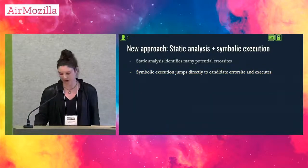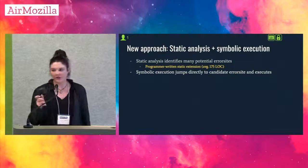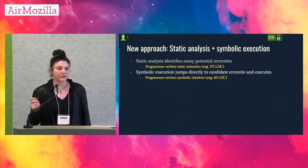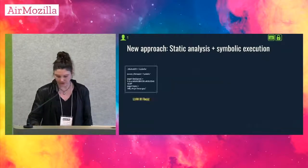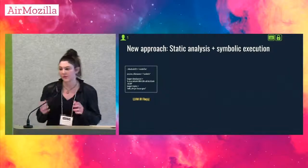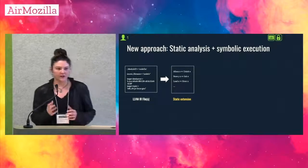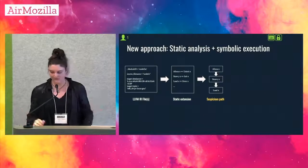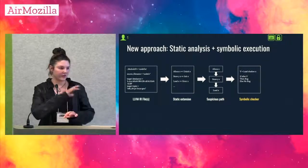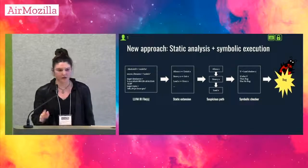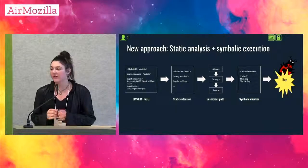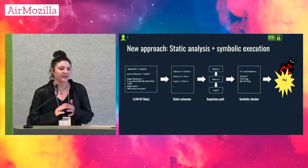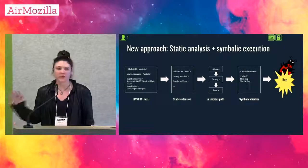From an implementation perspective, that means we are writing small static checkers to identify the error sites — you can think of these kind of like client checkers — and then we're writing little tiny symbolic checkers that validate the error. You take an LLVM IR file that's a compiled piece of the browser. The static extension examines that IR representation looking for any kind of suspicious path. Then the symbolic checker attaches to that path and tries to figure out if the bug is real or not. One important point: this is not just for false positive suppression — the symbolic checker ends up rejecting something like 99% of paths in all cases.